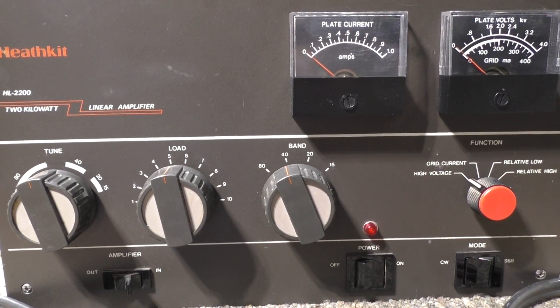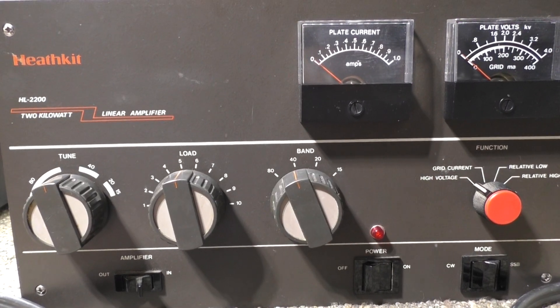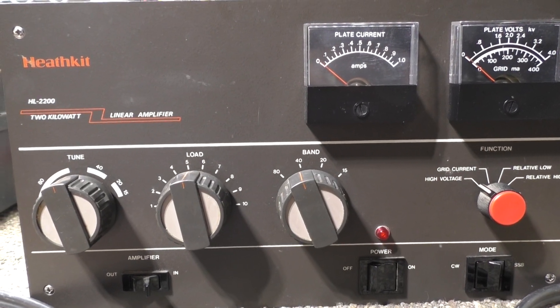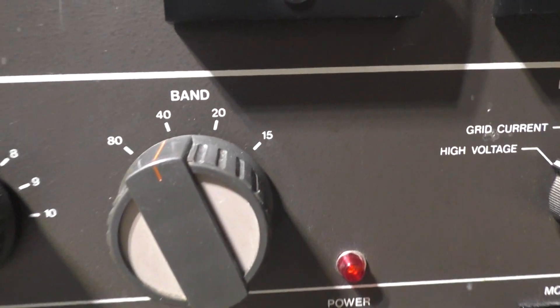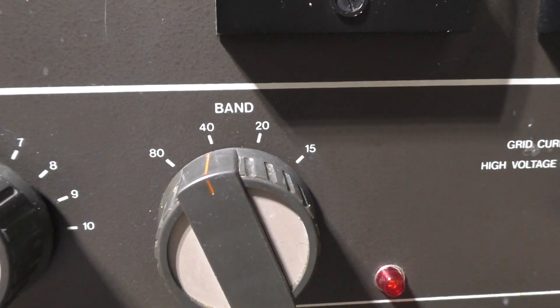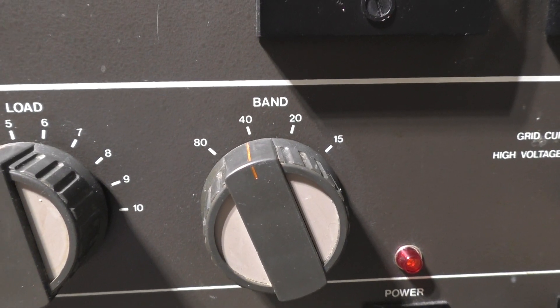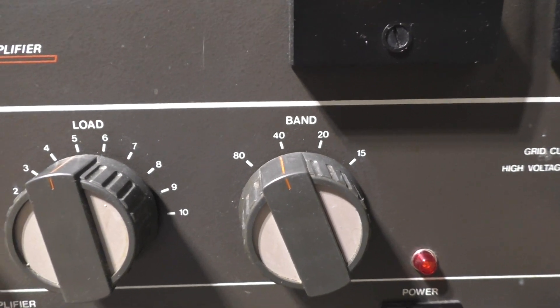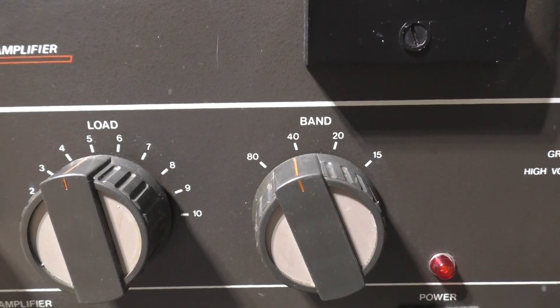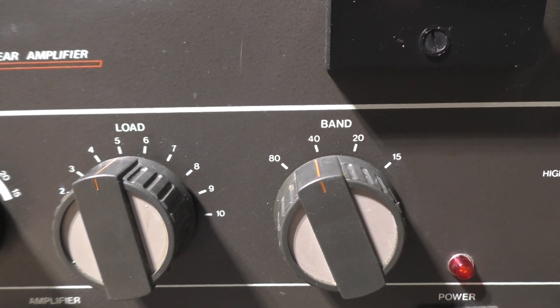This is basically almost part-for-part an SB-221 without 10 meters in it originally. You can see the band switch: 80, 40, 20, and 15. Didn't have the tap for 10 on the coil and it didn't have an input tuner for 10 meters.